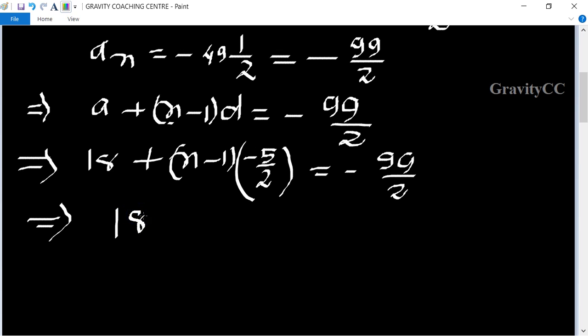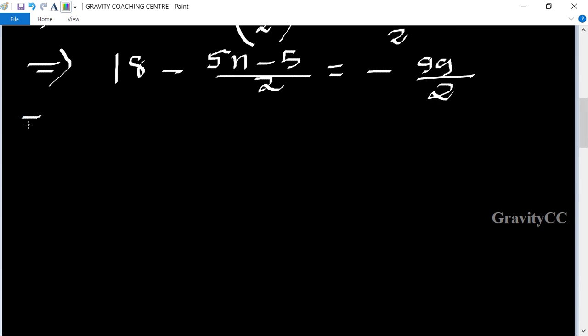18 minus 5n minus 5 upon 2 equals minus 99 upon 2, implies that